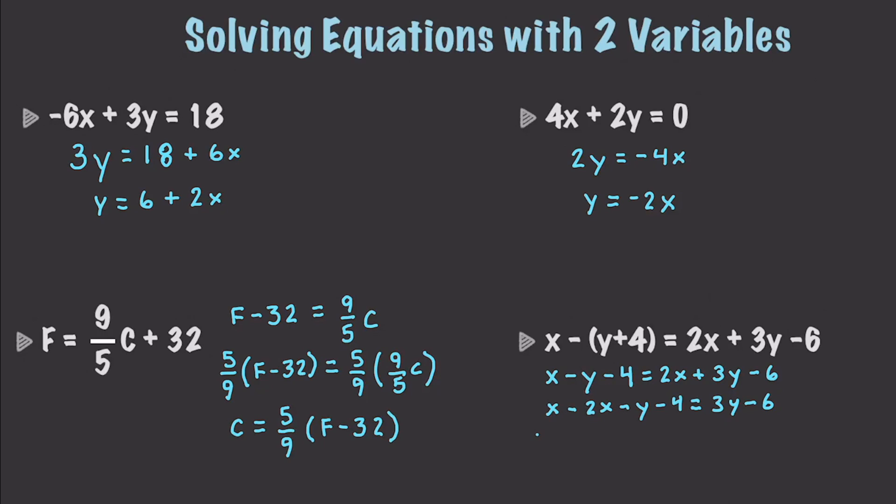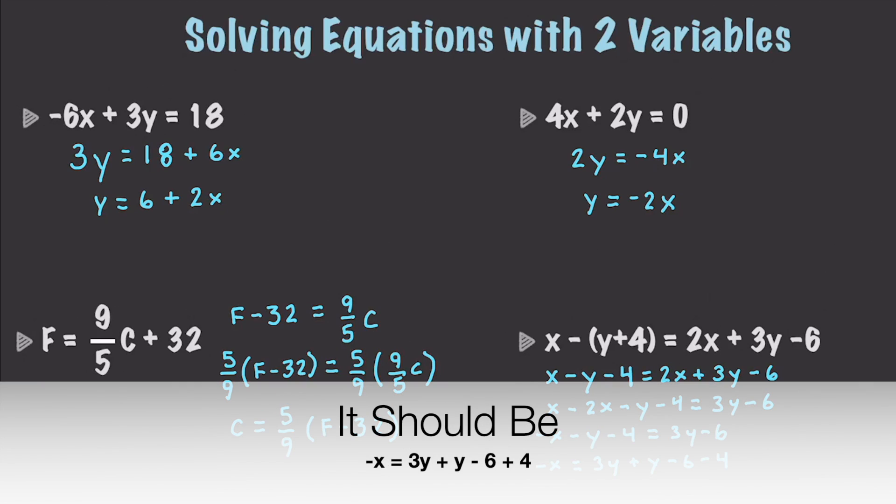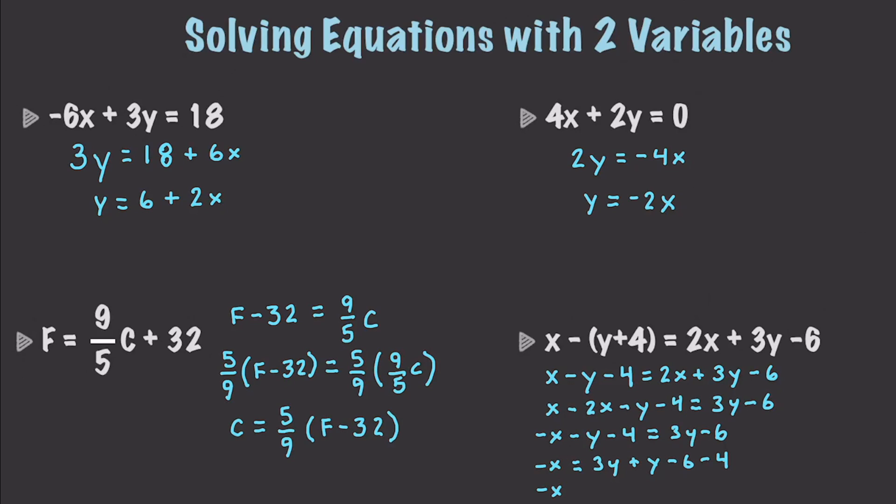So this is going to become x minus 2x minus y minus 4 is going to be equal to 3y minus 6. We will have negative x and we want to get rid of the negative y and the negative 4 because I want to solve for x in this situation. So negative x is going to be equal to 3y plus y minus 6 plus 4. That's going to become negative x which is equal to 4y minus 2. And then if I divide by the negative 1, that's going to give me a final answer of x is going to be equal to negative 4y plus 2.